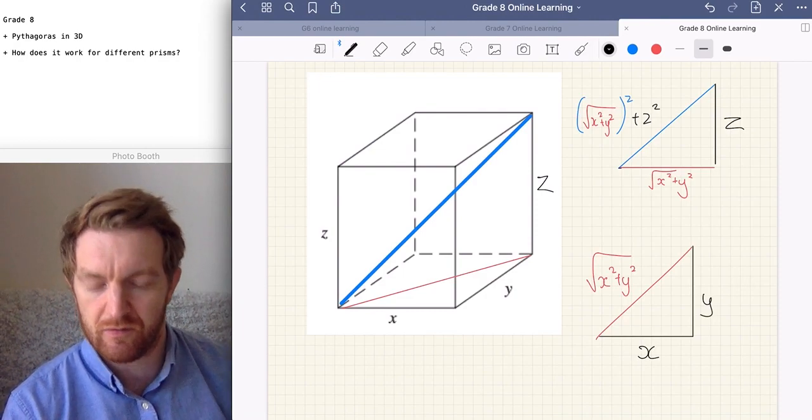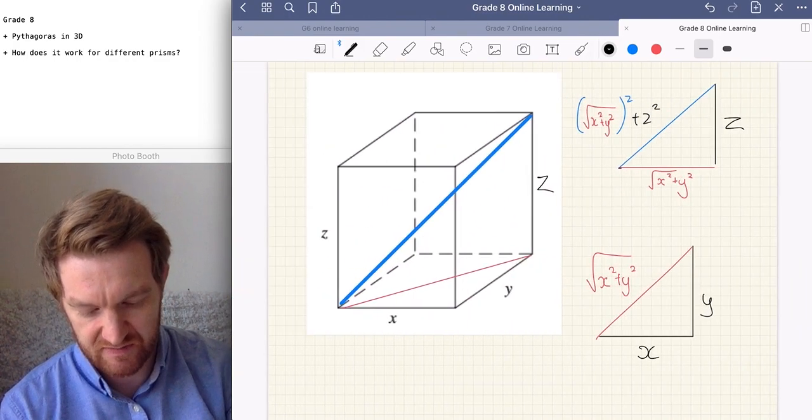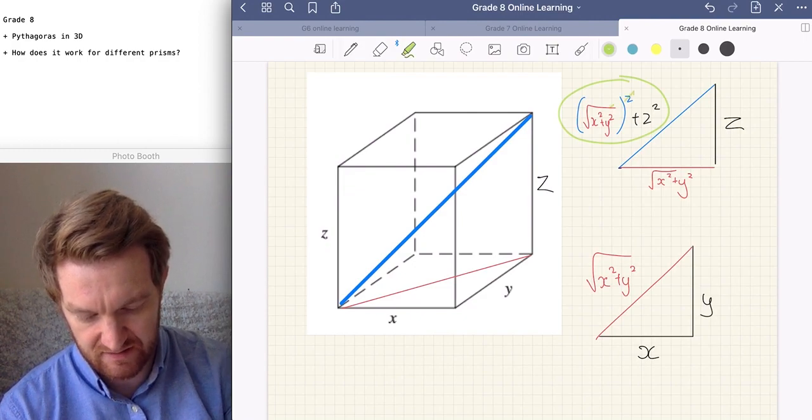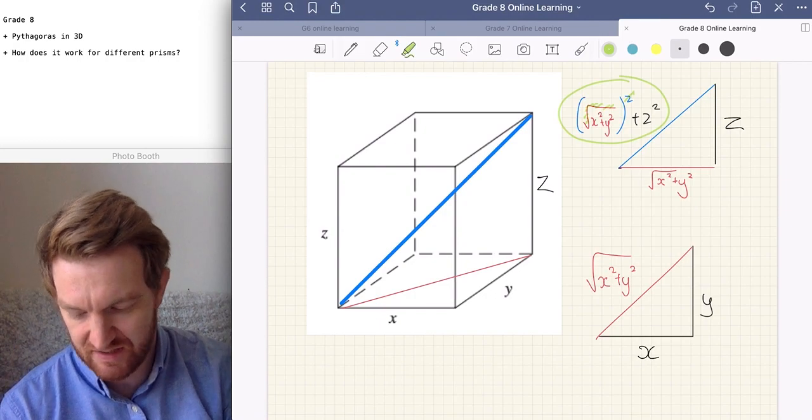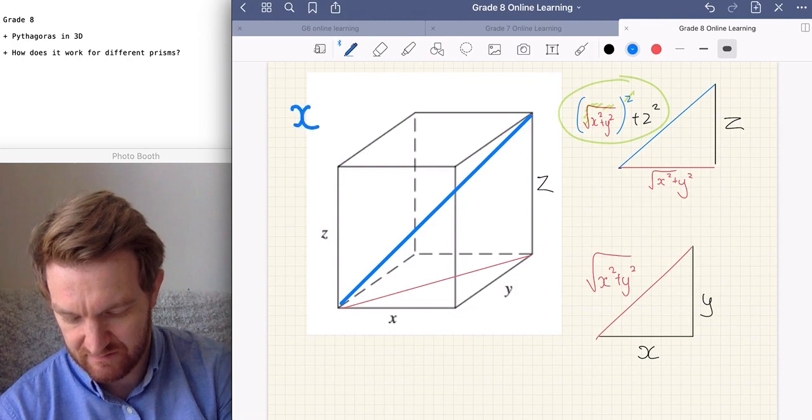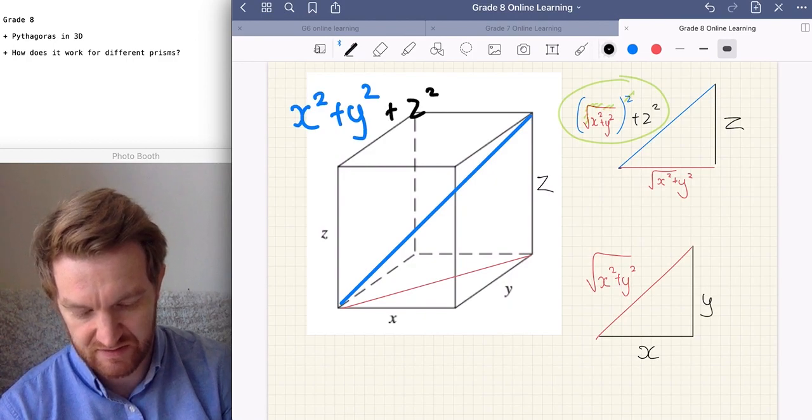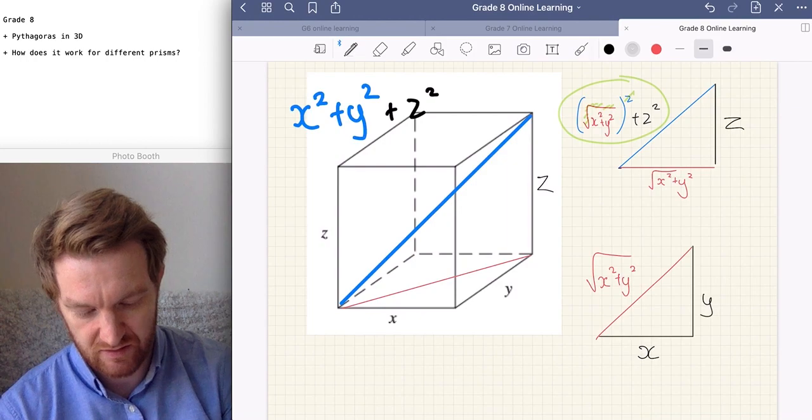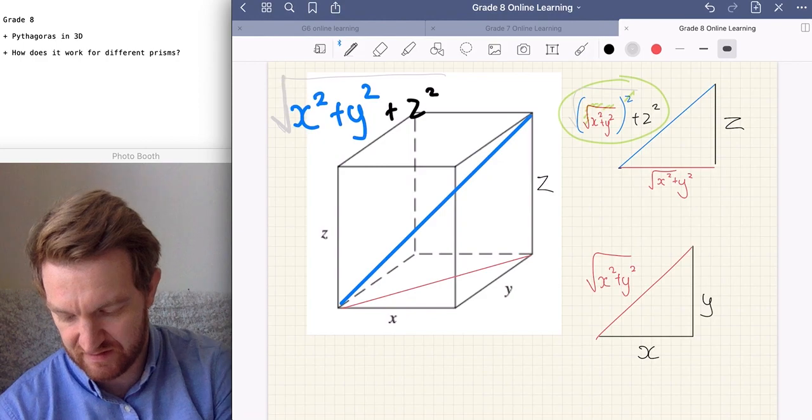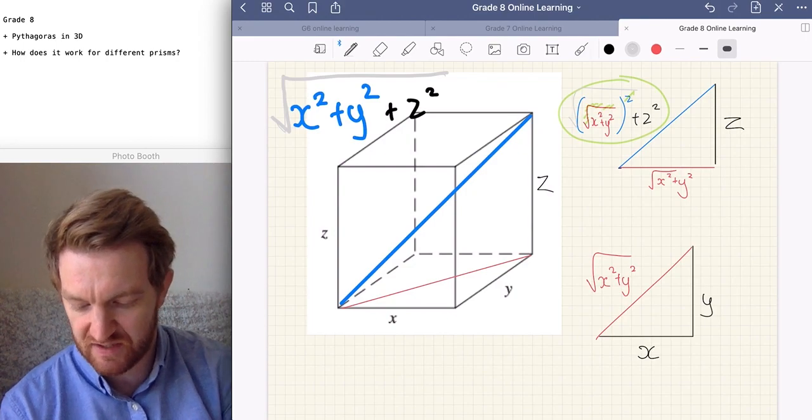And something interesting we're going to notice here when we've got all variables is that when we multiply this expression here out, for the cancelled out squared and the square root, it actually leaves us with X squared plus Y squared. Once we cancel out, plus Z squared. But don't forget, what have I forgotten to put on? That the whole thing is square rooted.